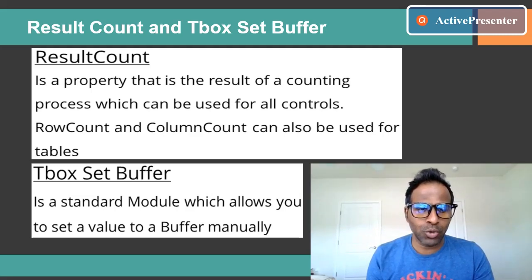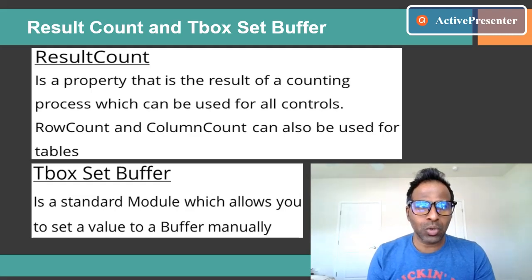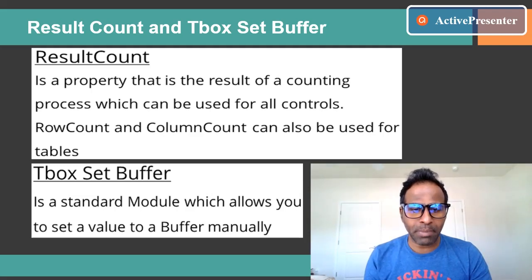TBox Set Buffer is a standard Tosca module that comes with the Tosca tool, which allows you to set a value to a buffer manually. In previous sessions I explained how to buffer a value dynamically to a variable, but TBox Set Buffer is used to set a buffer manually.